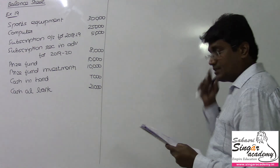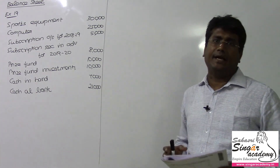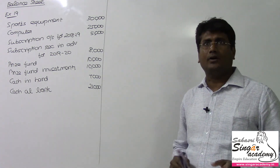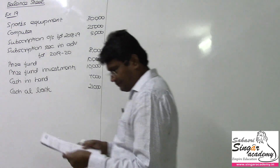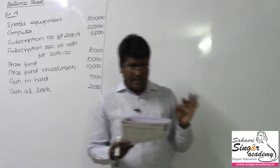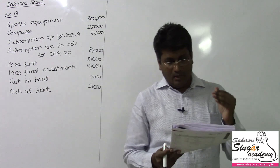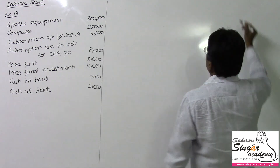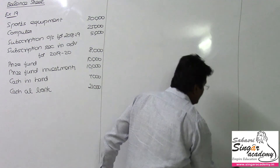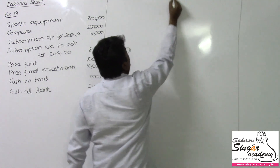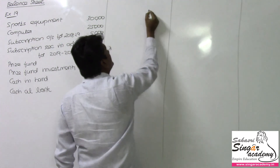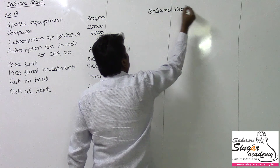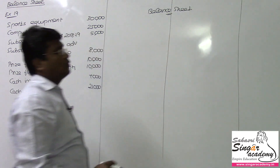Balance sheet exercise number 19 — to find out some missing data, usually the capital fund or general fund. I am going to calculate that here. Compute the capital fund of Salem Sports Limited Club as on 1st April 2019. I will open the balance sheet and post all the data here to find out the missing capital fund or general fund. Balance sheet as on the date for Salem Sports Club.